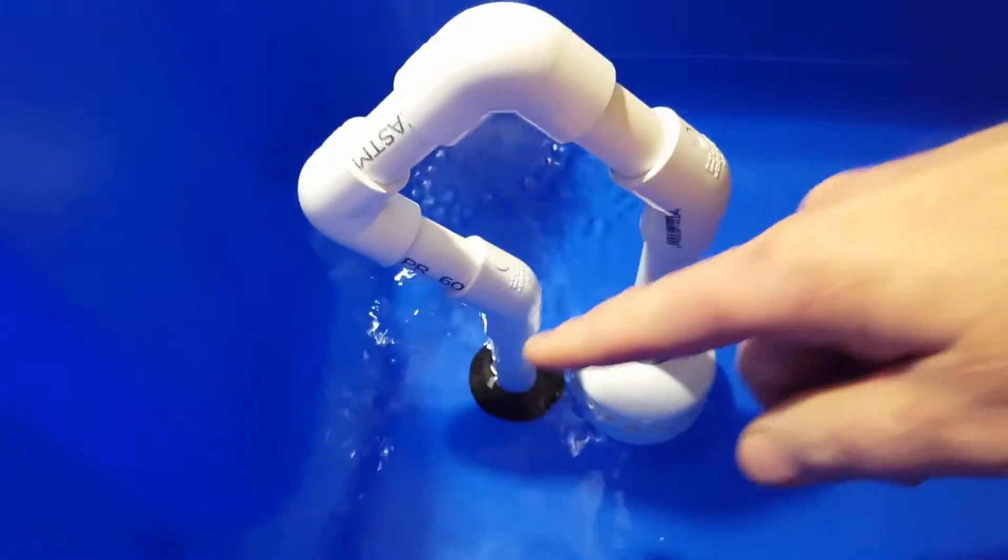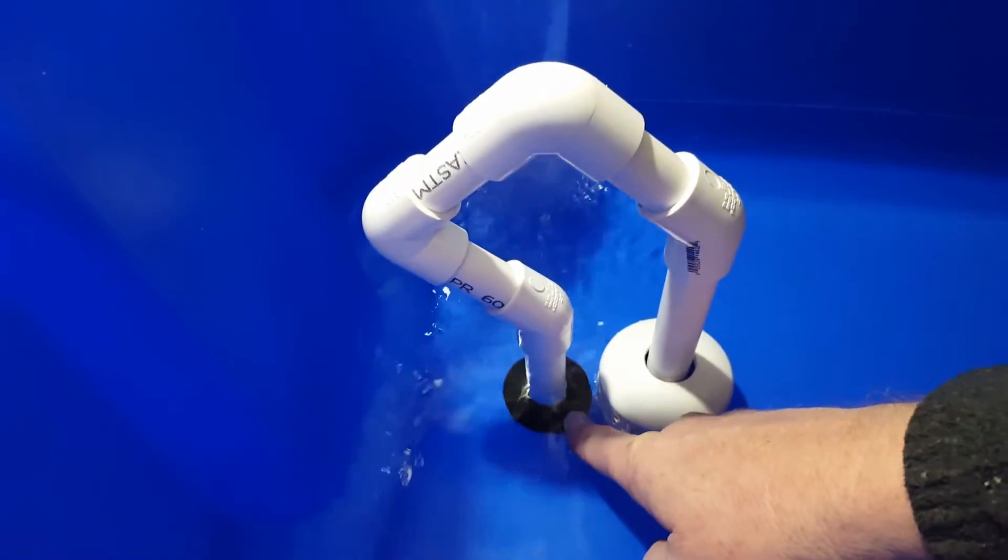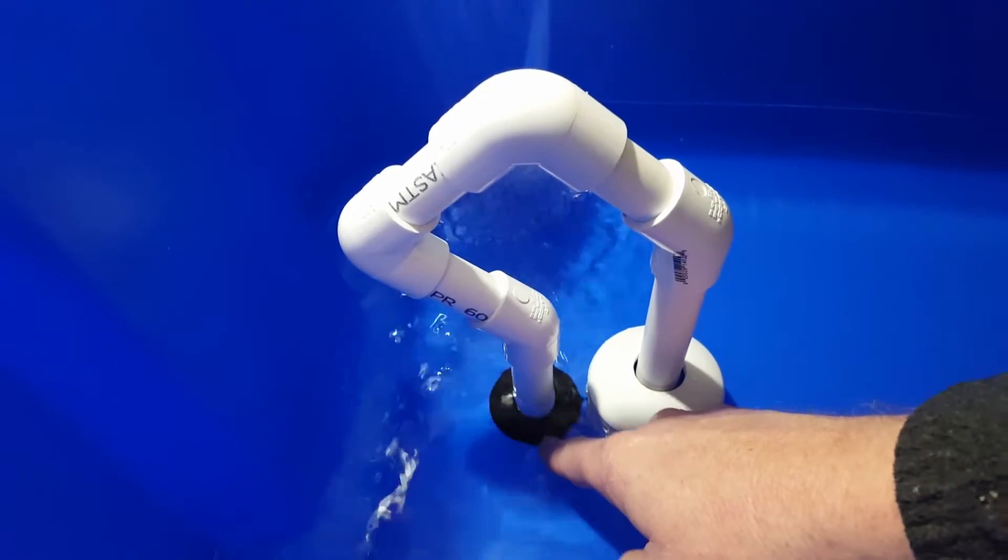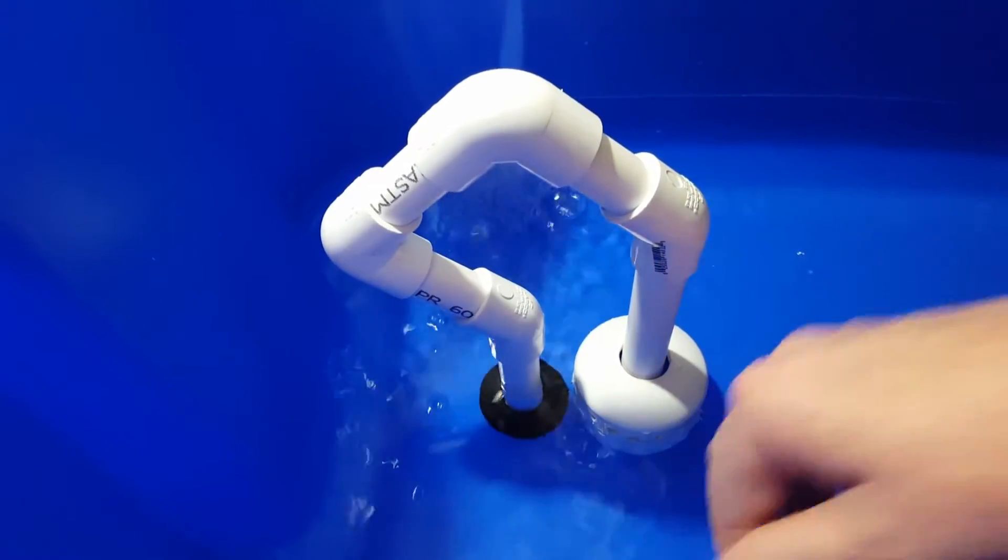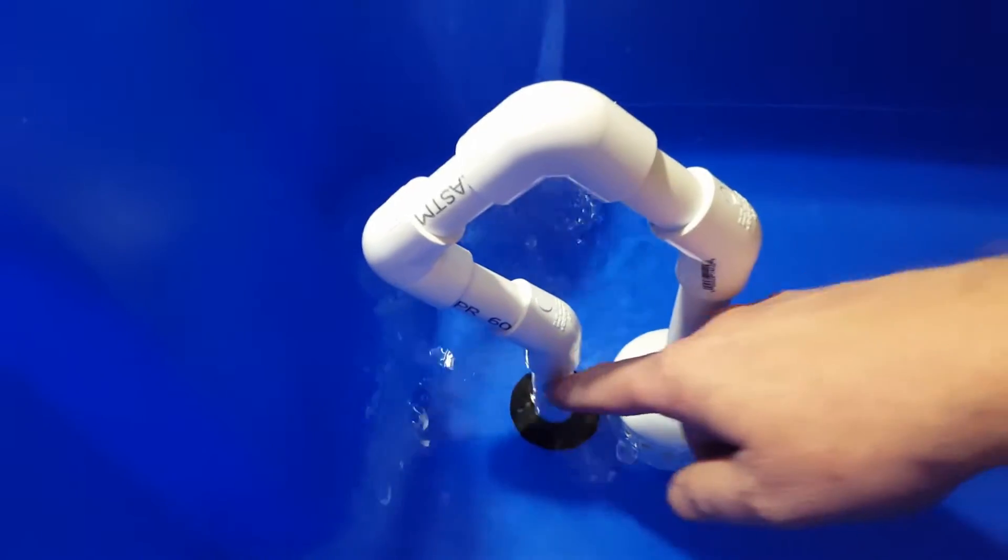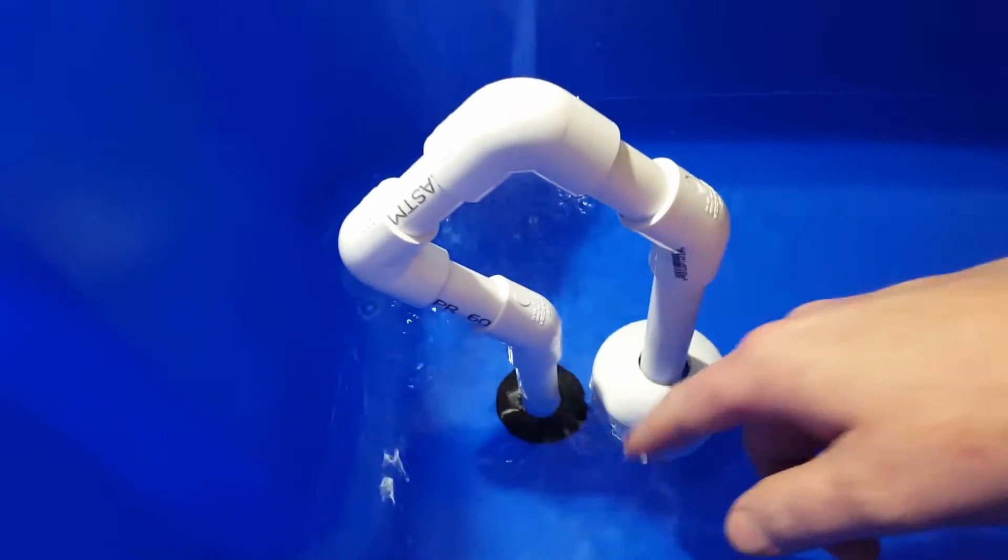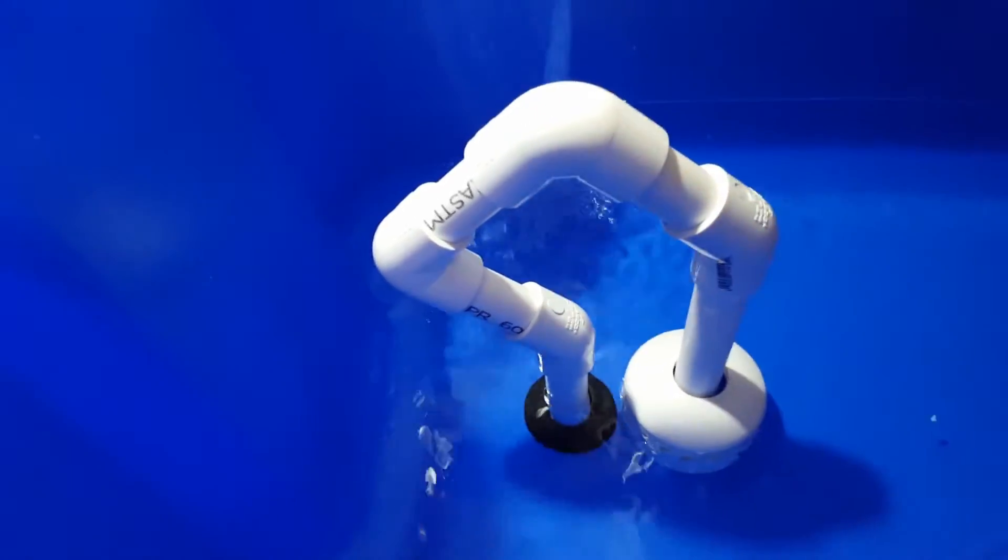So I wanted to point out I'm using the Uniseal. Highly recommend these. I will put a link below on where you can buy these. Very simple - the pipe just pushes through. You cut a hole, the pipe pushes through. It's a rubber seal.